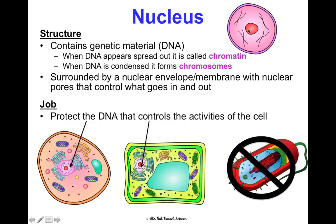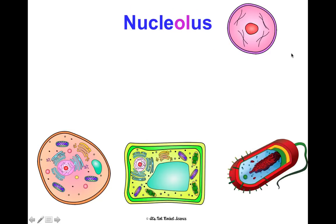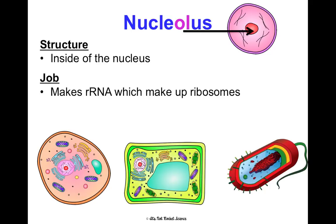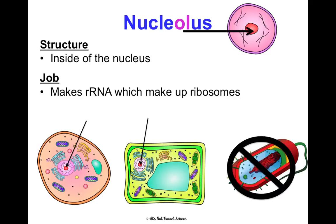Inside the nucleus is the nucleolus — that red structure in the middle. Its job is to make rRNA, which stands for ribosomal RNA, which makes up ribosomes. It's present in eukaryotic cells but not in prokaryotic cells. We'll talk more about rRNA in a later unit.